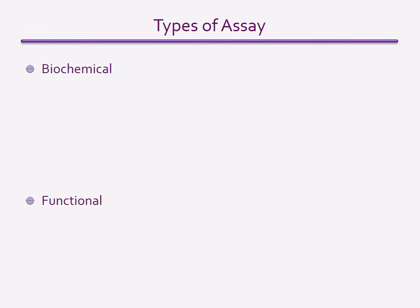This slide lists the different types of assay that are used in drug discovery and development, and you should develop a good understanding of each kind. The main distinction is between a biochemical assay and a functional assay, with the latter measuring a physiological response.